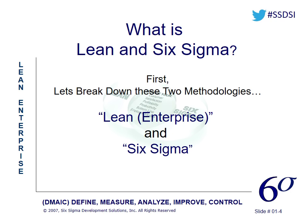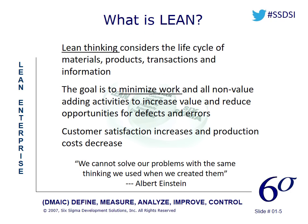Six Sigma, on the other hand, is really interested in what causes variation in a process or a system. What causes a three-shift operation with teams on each shift making the same exact thing to do it three different ways? That variation leads to problems, chaos, defects, and customer dissatisfaction. At the root of that is variation. And Six Sigma asks: why is that variation existing, where does it come from, how do we solve it, how do we control it, optimize it, and control it?